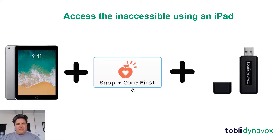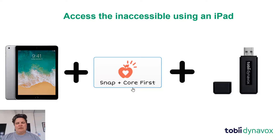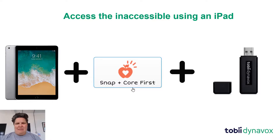Another great example is giving access via an iPad. You can put Snap Core First on an iPad — it's just under £50 on the App Store. If you want to control your smart TV but don't have a device with environmental controls, you plug the USB dongle into the smart TV, and instantly you can access things like Netflix and YouTube using mouse movement and selections within Snap Core First on the iPad. It's a really nice way of thinking outside the box and enabling environmental control.